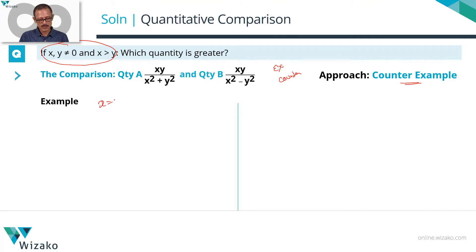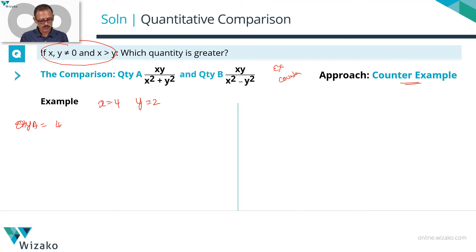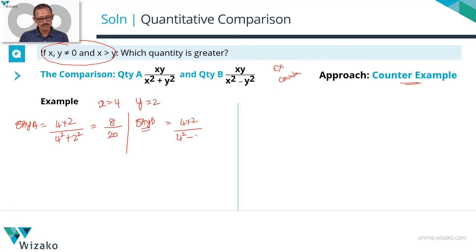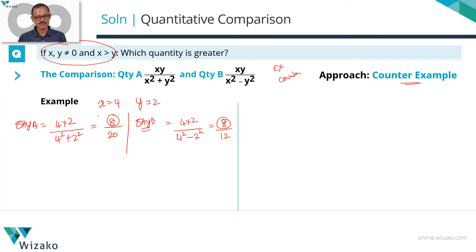Let's try x = 4, y = 2. This satisfies x ≠ 0, y ≠ 0, and x > y. Quantity A = (4 × 2) / (4² + 2²) = 8 / (16 + 4) = 8/20. Quantity B = (4 × 2) / (4² − 2²) = 8 / (16 − 4) = 8/12. The numerators are equal, and since Quantity B has the smaller denominator, Quantity B is greater than Quantity A for these values.